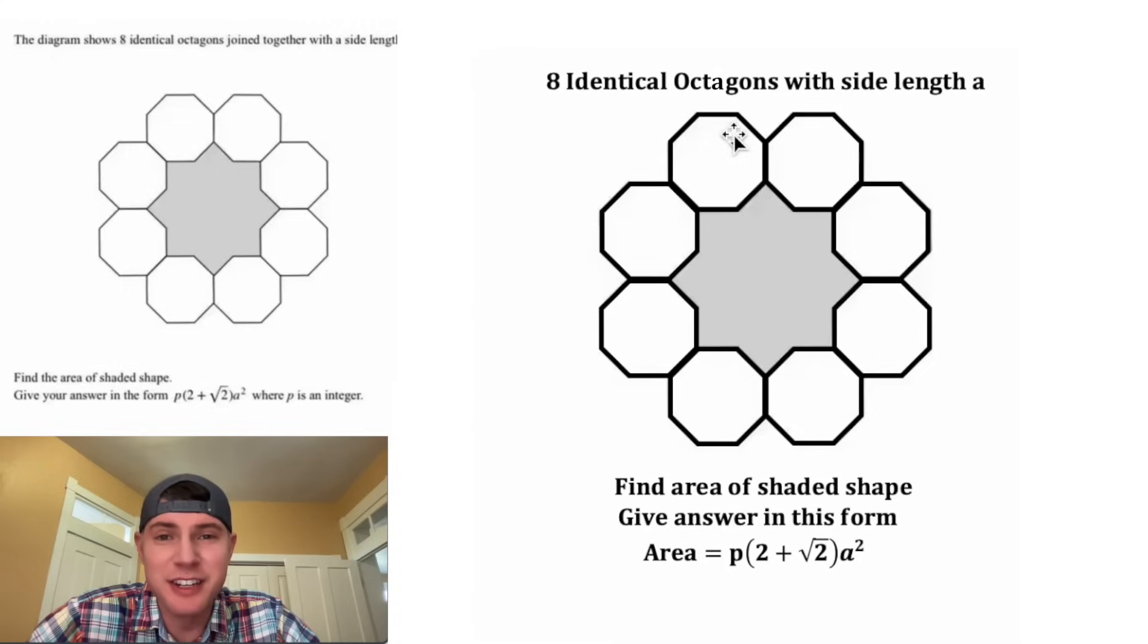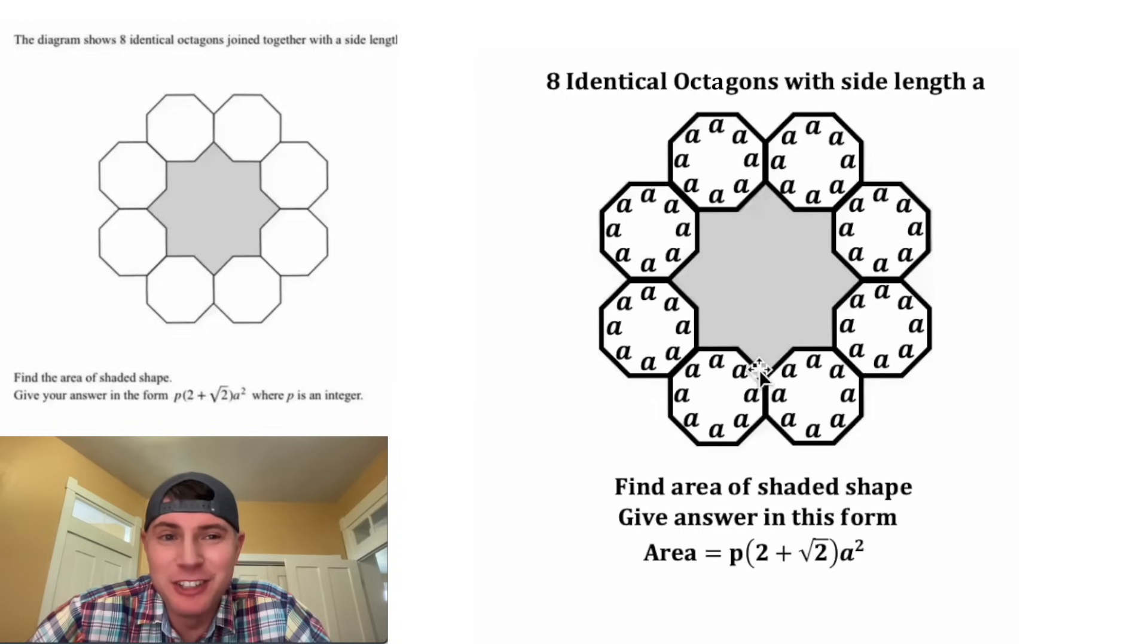And it tells us we have eight identical octagons with side length A, so all of these will be equal to A. In fact, all of these will be equal to A. This might look like a lot of A's, but to my regular followers, they're used to seeing lots of A's.